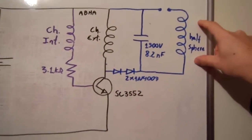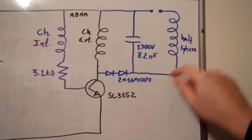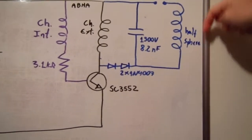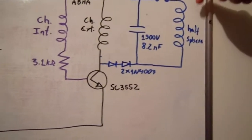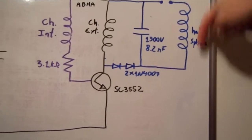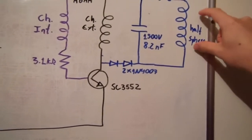The half-sphere coil is connected in a way that when the high voltage spike comes to it, it opposes the current, so the spike increases its voltage here in order to create a spark here.